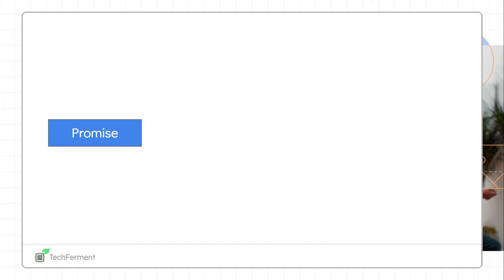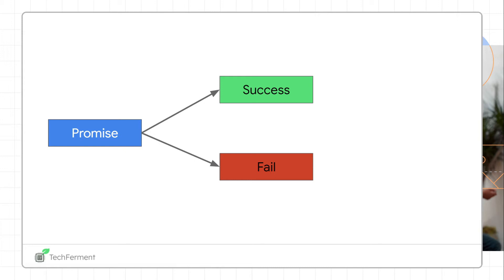A JavaScript promise is just like a real-life promise. For example, if I give you a promise about providing a YouTube tutorial on various web developer technologies, this promise has two results: it will either give you success or it will fail if I'm not able to deliver the tutorial on web technologies.